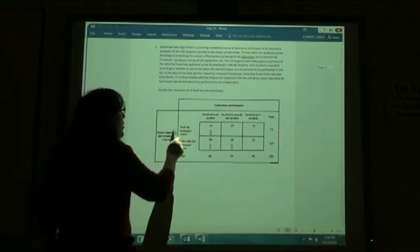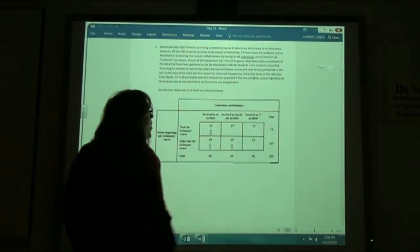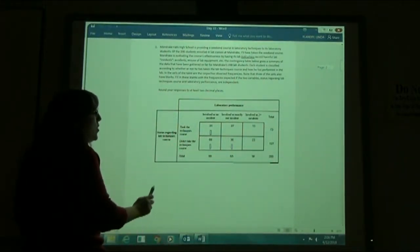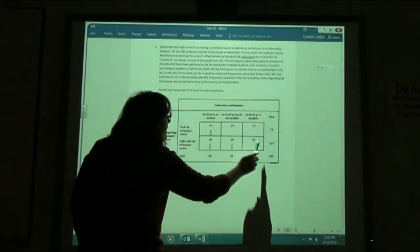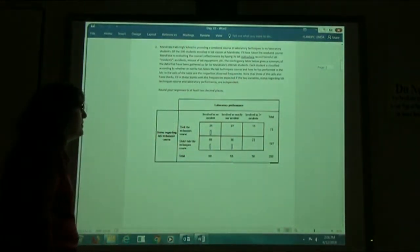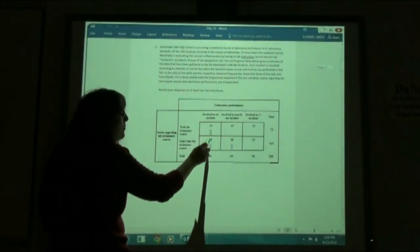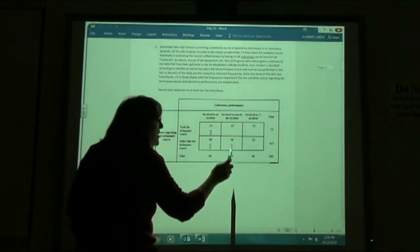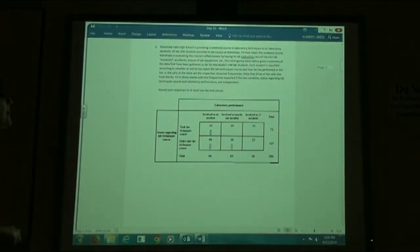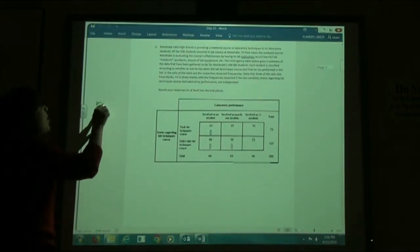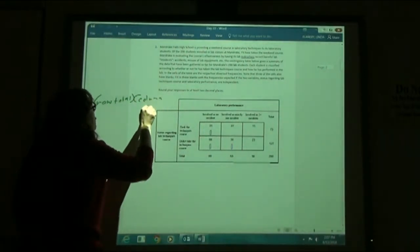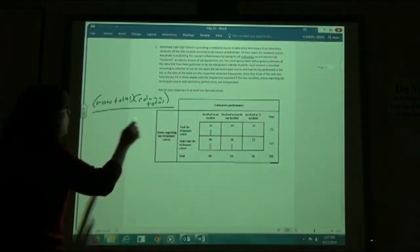So if we took the course, we have no accidents, one incident, or two or more incidents: 31 here, 27 here, 15 here for a total of 73. Those that didn't take the course, 68 had no incidents, 36 one incident, 27 two incidents. They have all of those numbers in there and they just want you to put in the expected frequency. Expected frequency then, we're going to take our row total times our column total divided by the total sample size.